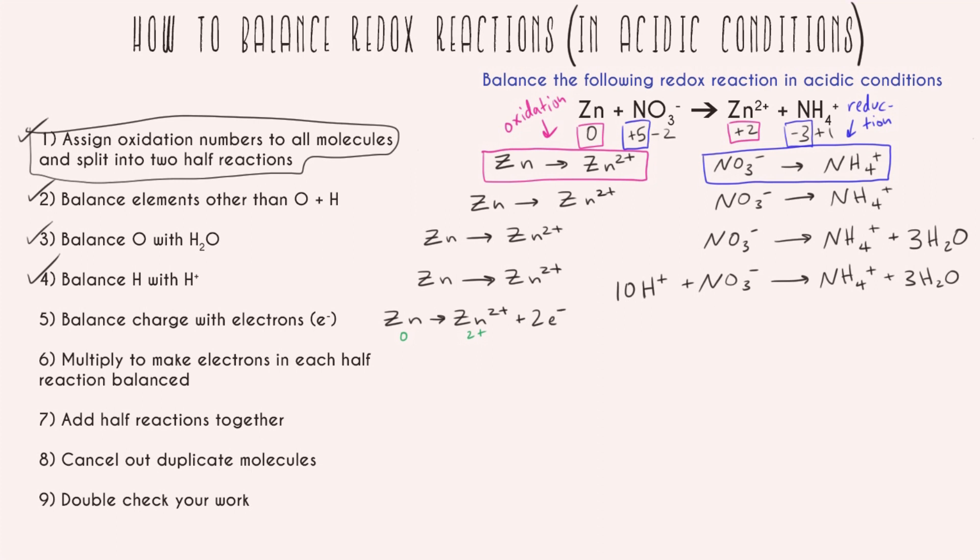And so now once again recopying the other half reaction. Looking at the overall charge on both sides. On the left hand side I have 10 positive from the hydrogens and then I have one negative, so that ends up being a plus nine charge. And then on the right hand side I have a positive one from the NH4 plus and all the waters are neutral. So overall the charge of this is positive one. So again all I have is my negative electrons which means I have to bring the positive nine down to a positive one, which means I'm going to need an additional eight negative electrons on the left hand side.